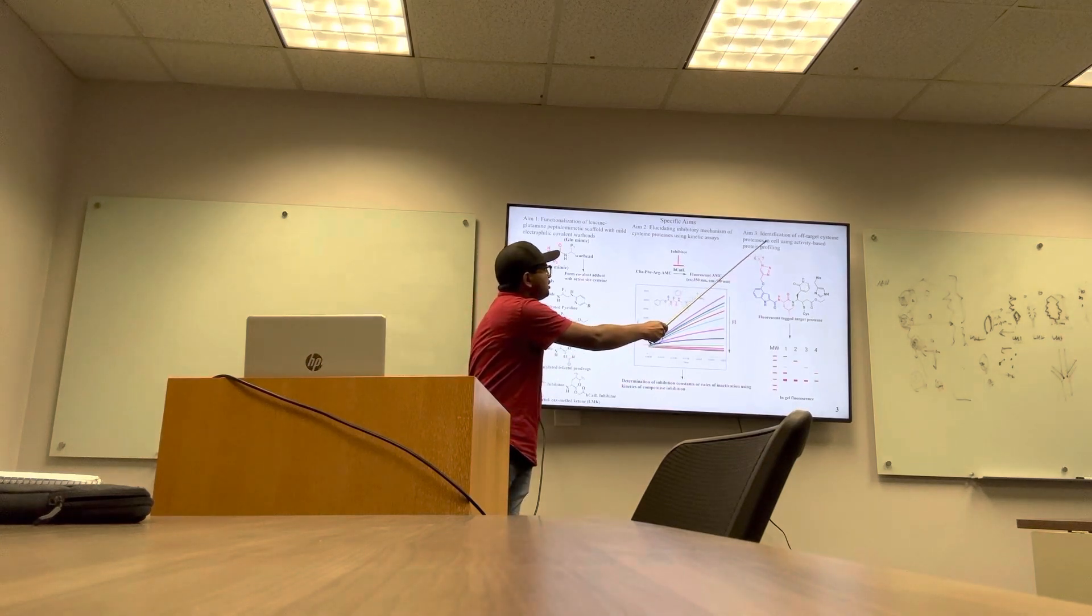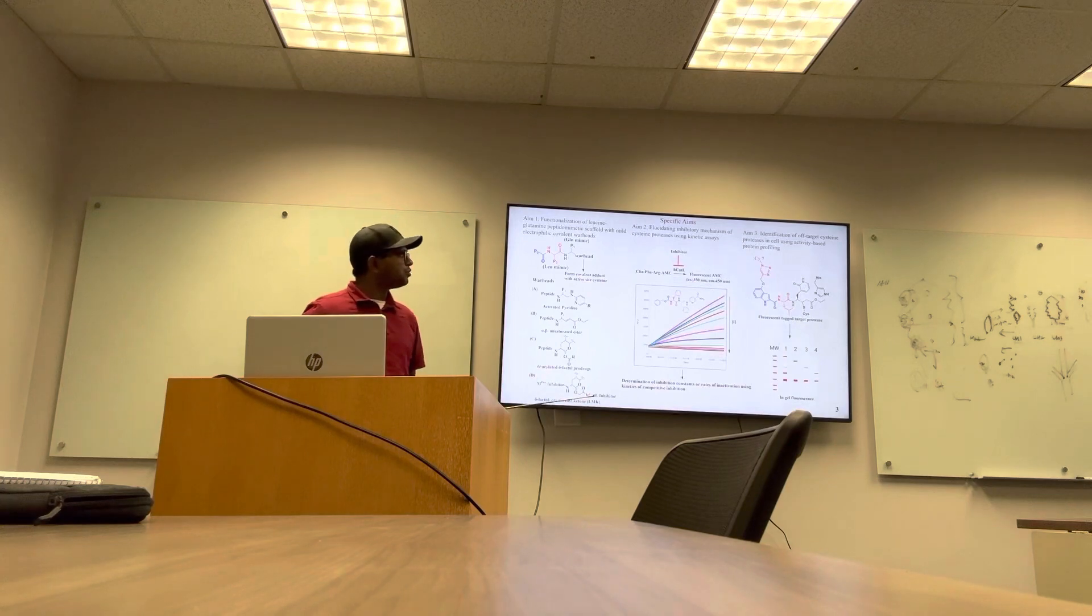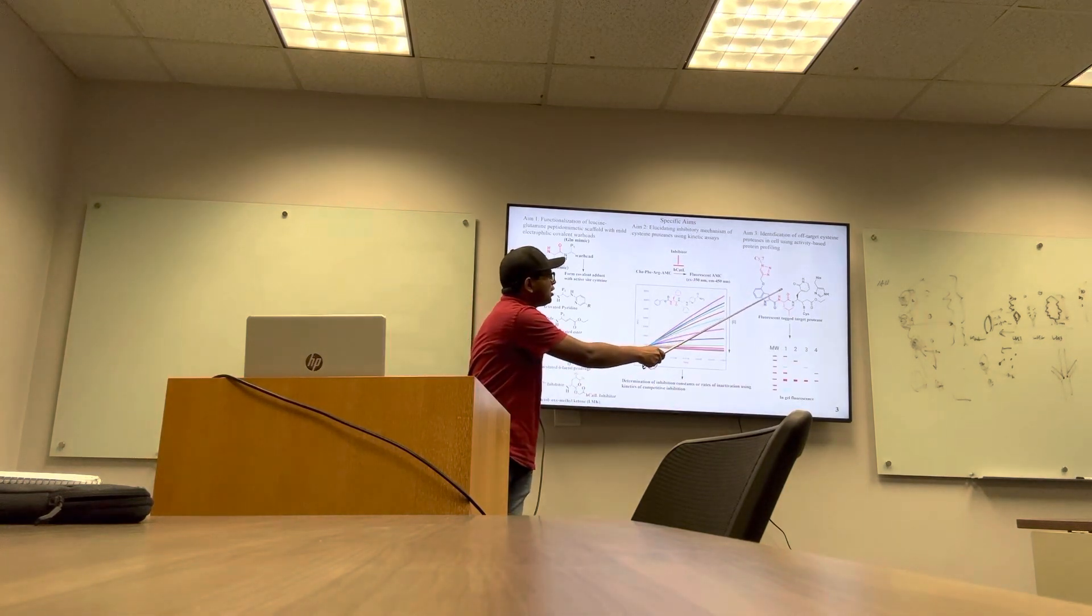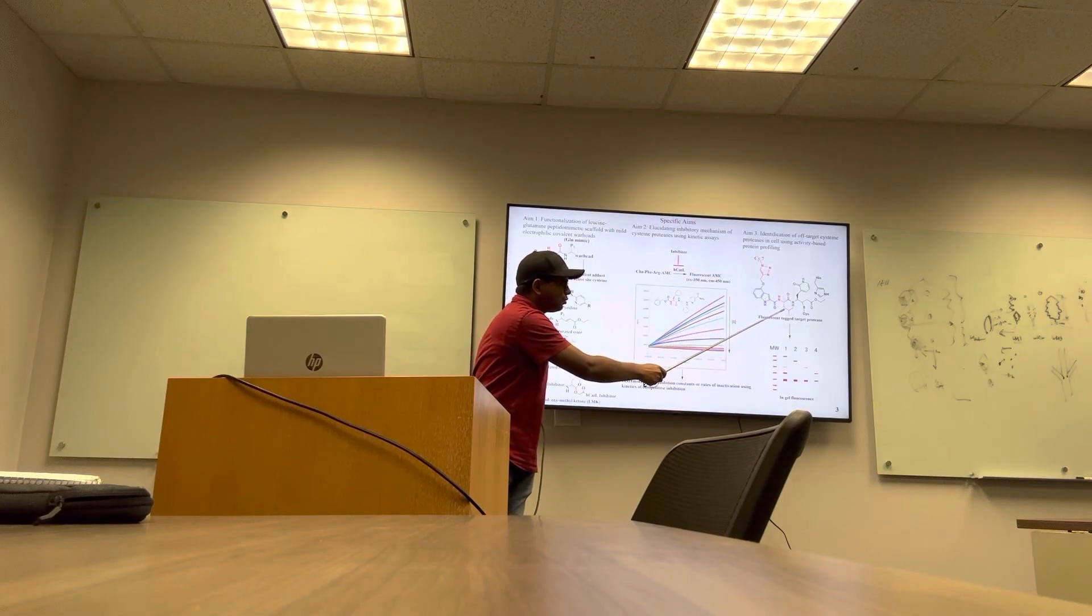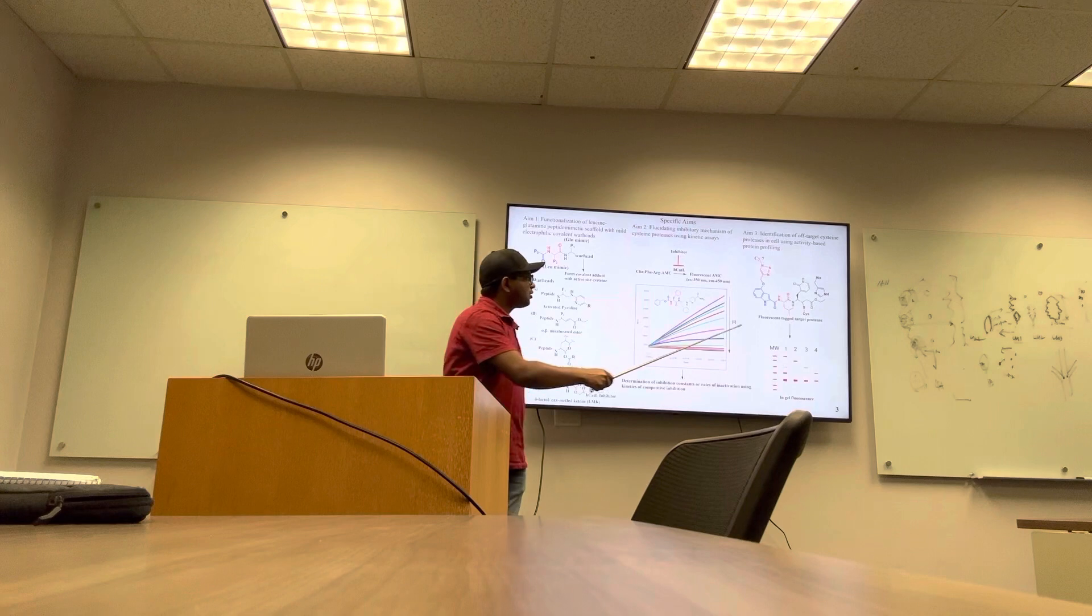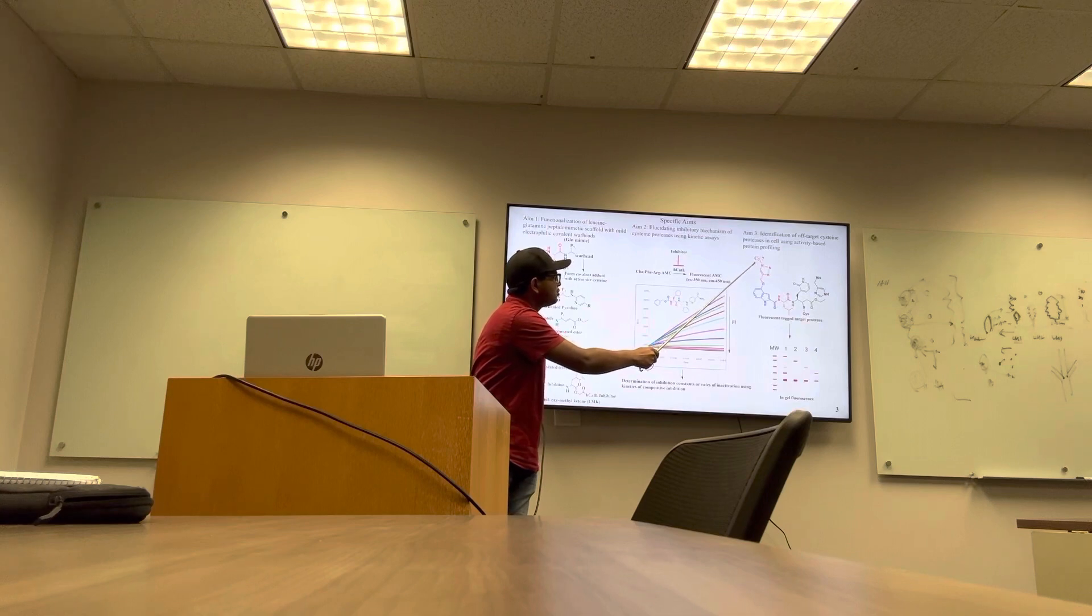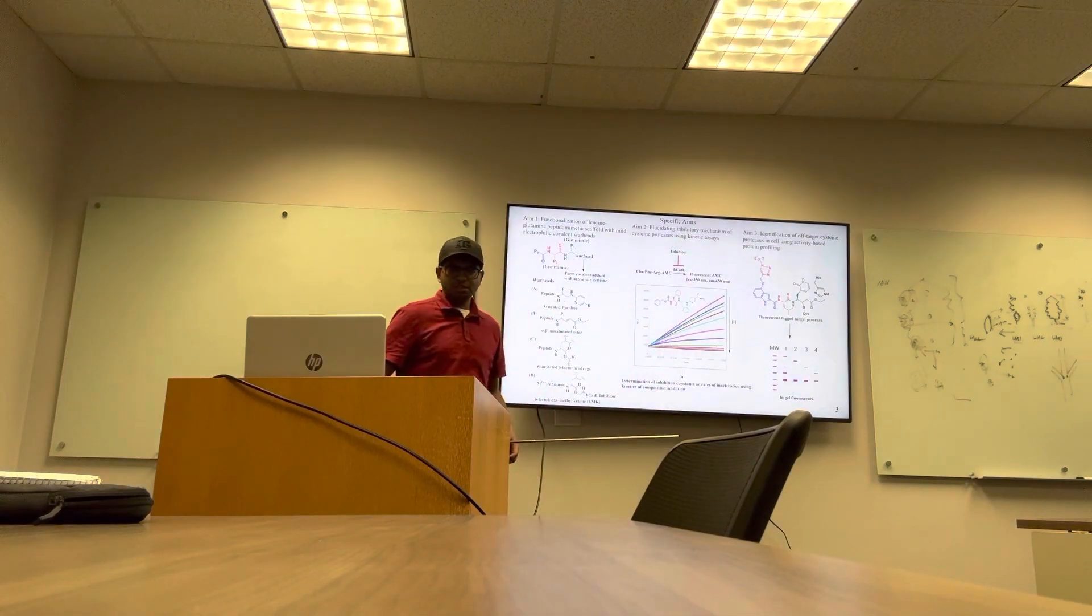Third aim in this proposal is to identify all off-target cysteine proteases as well as their extent of inhibition using activity-based protein profiling. For that we will use alkyne-labeled irreversible inhibitors to modify all our target proteases in cells such that these labeled inactivated proteases can be labeled with azide-containing fluorophore such as Cy7-azide and can be visualized in in-gel fluorescent assays.